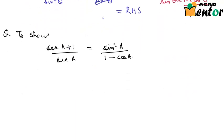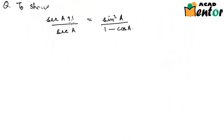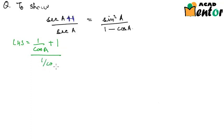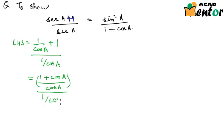Let's move on to the next question. Here we are supposed to show that (sec a + 1)/sec a = sin²a/(1 - cos a). Starting with the left hand side: (sec a + 1)/sec a. Converting to cos a, we get (1/cos a + 1) divided by (1/cos a). Taking the LCM in the numerator gives (1 + cos a)/cos a, divided by 1/cos a. The cos a cancels, leaving us with 1 + cos a.